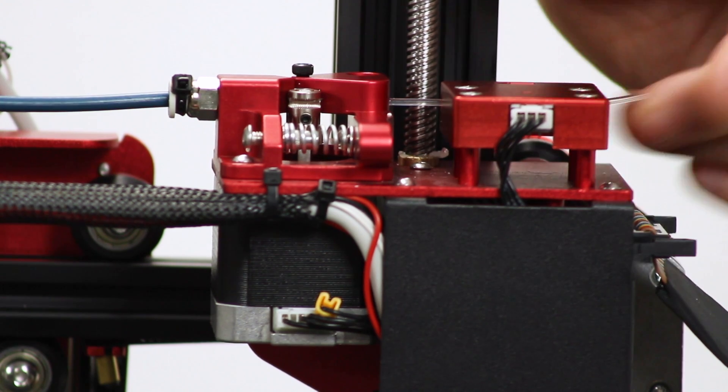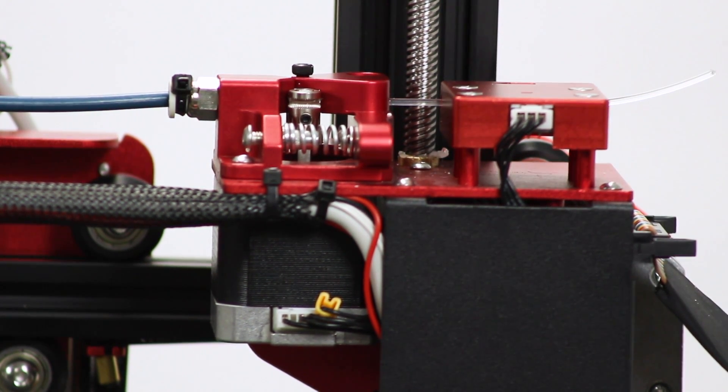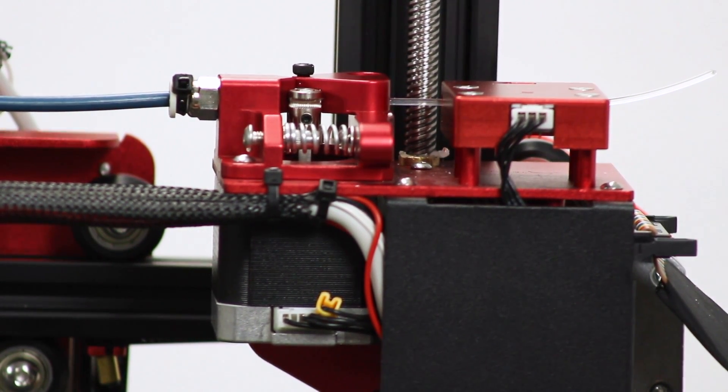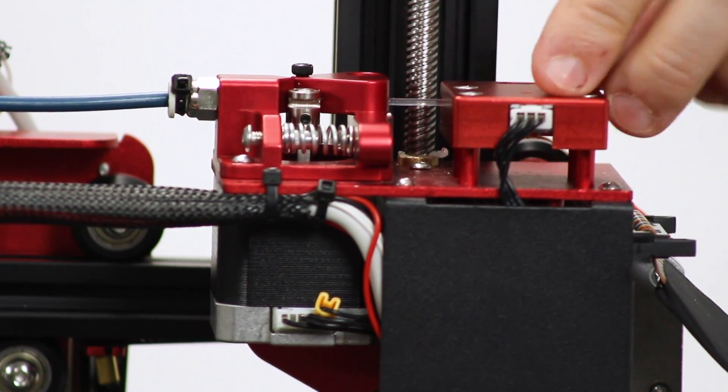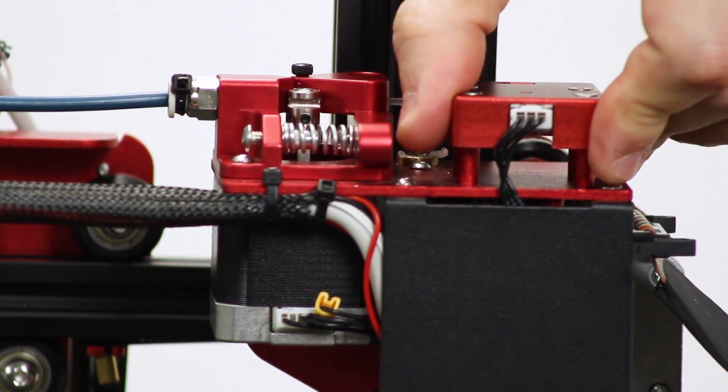And one of my major complaints, that filament run-out sensor being an afterthought and just friction fit, that's completely resolved here. It's in an aluminum enclosure, and it's bolted to this bracket. So that's going nowhere anymore.